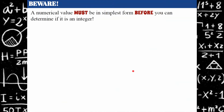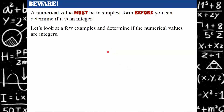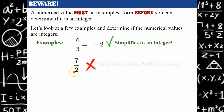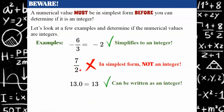Beware! A numerical value must be in simplest form before you can determine if it is an integer. Let's look at a few examples. Negative six-thirds: six divided by three is two, and it's negative — negative two. So this simplifies to be an integer. Although this is a fraction, it simplifies to an integer. Seven over two is not an integer because it's in simplest form — seven halves, or three and one half, but it cannot be simplified to an integer. And then we have 13 point zero, which can be written as 13, which is an integer.